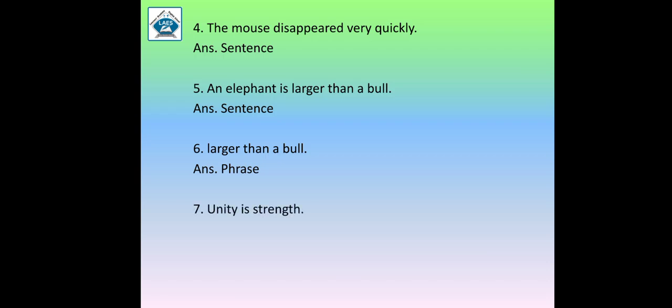Seventh: 'Unity is strength' — एकता ही ताकत है, अमारी एकजुटता अमारी ताकत है — so what is this? It is a sentence। Last one: 'here and there' — tell me, what is it? Yes, it is a phrase — 'here and there,' nothing is conveyed, nothing is clear, it is incomplete — it does not make a complete sense. So it is a phrase.